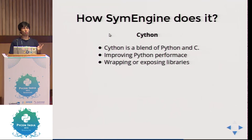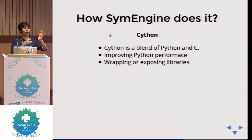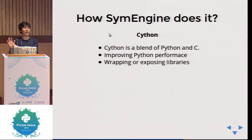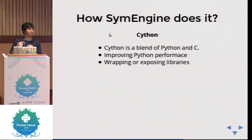How does SymEngine write wrappers to C++ code using Cython? Cython is a blend of Python and C, and it has two main uses. First: you have Python code, make minimal changes to it to become Cython code, compile it, and execute — it is just Python but very fast. Second: you have C++ code and write Cython code that calls the C++ functions; you define Python functions that call those C++ functions, and Cython creates a Python extension module that you can just import.